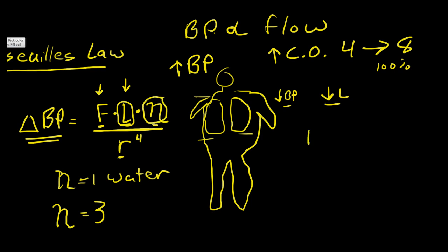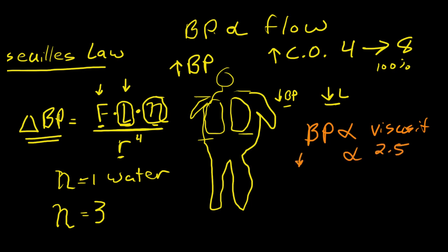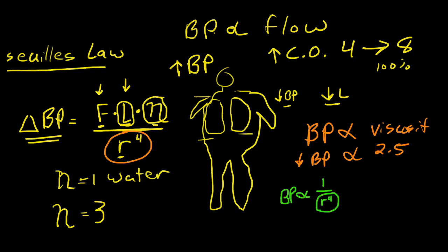Viscosity also — blood pressure is directly correlated with viscosity. So if you decrease viscosity from a normal viscosity of 3 to 2.5, you're going to have an equivalent decrease in blood pressure. But what's really interesting to note here is that blood pressure is inversely related to the radius to the 4th power.